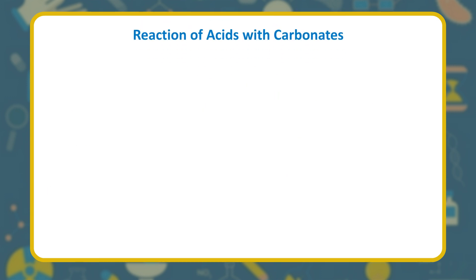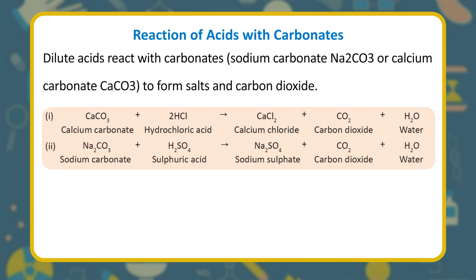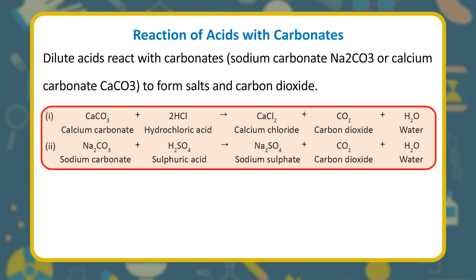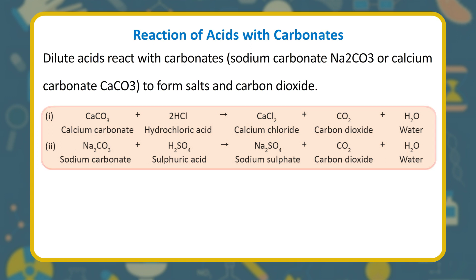Reaction of acids with carbonates: dilute acids react with carbonates — sodium carbonate (Na₂CO₃) or calcium carbonate (CaCO₃) — to form salts and carbon dioxide. For example: CaCO₃ + 2HCl → CaCl₂ + CO₂ + H₂O.